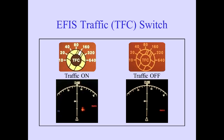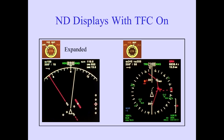The traffic switch labeled TFC on the EFAS panel controls the ND display. Pushing the TFC switch either displays TCAS data or turns off the data. With TFC on, the ND displays advisory data with either approach, VOR, or MAP selected. The centered mode only provides data when MAP is selected.